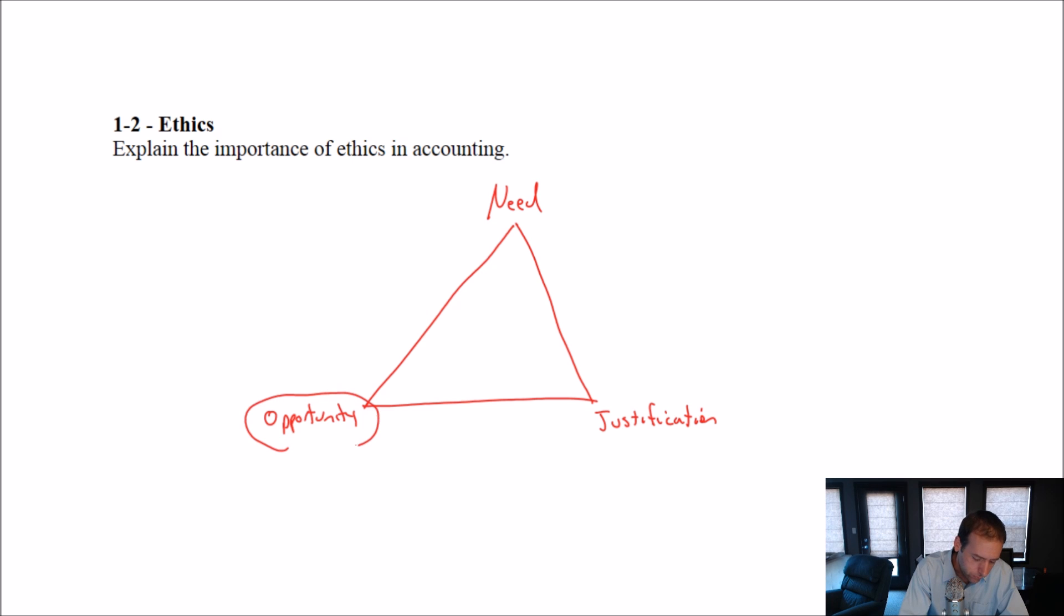Opportunity is where we come in as managers and as management accountants. Even if we behave ethically, and we're never going to steal, maybe we'll never have the need, or even if we do have the need, we'll never be able to justify this bad behavior to ourselves. But if you're running a company, it's not just you that you're worried about, it's everybody else.